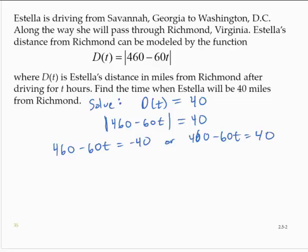Solving these equations by subtracting 460 from both sides on both equations, negative 60t is equal to negative 500, and negative 60t is equal to negative 420.